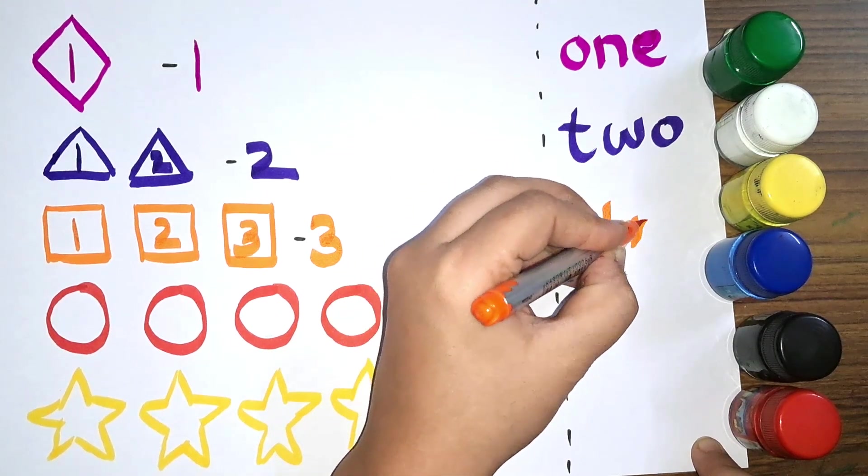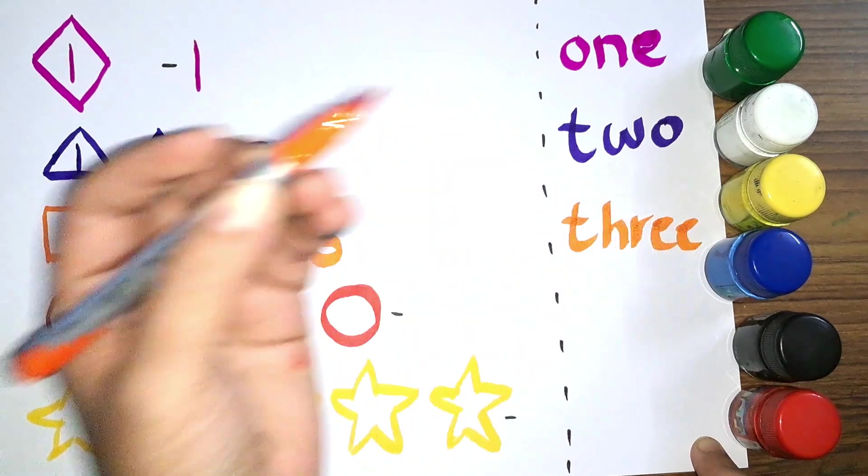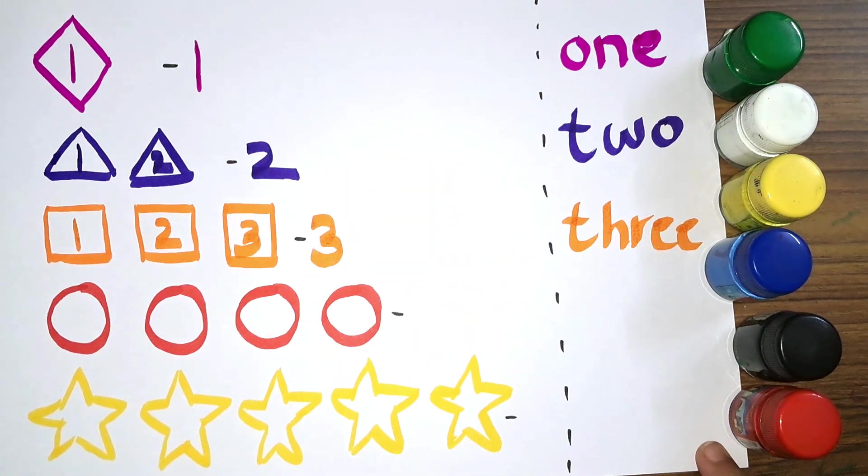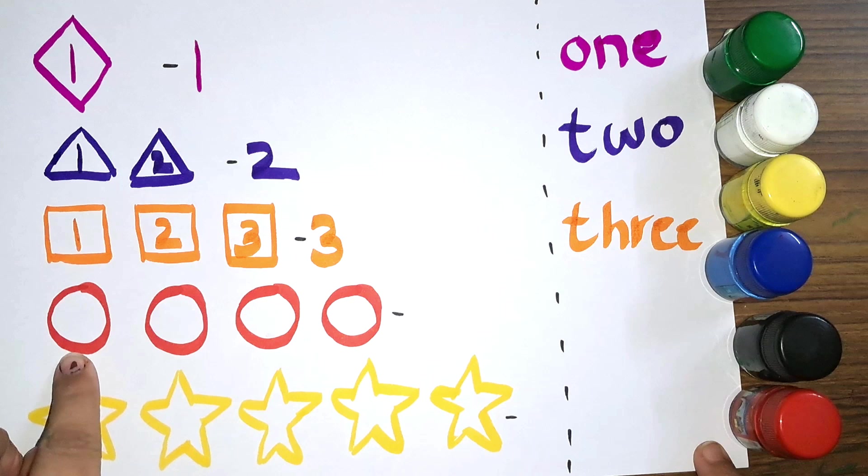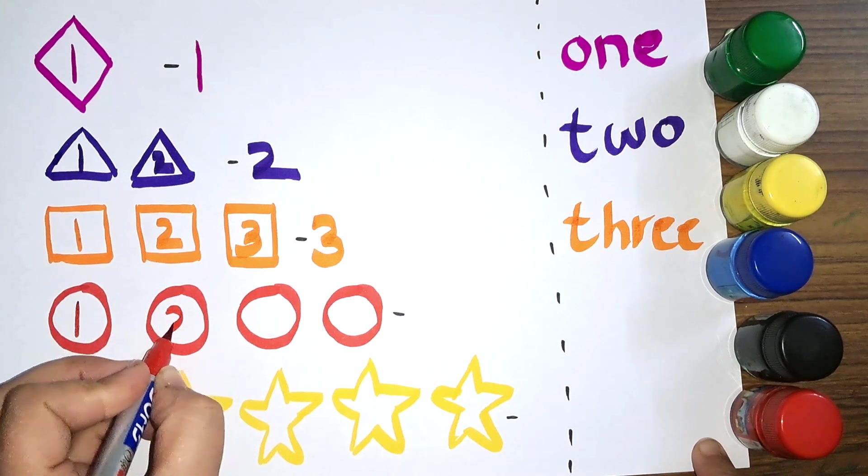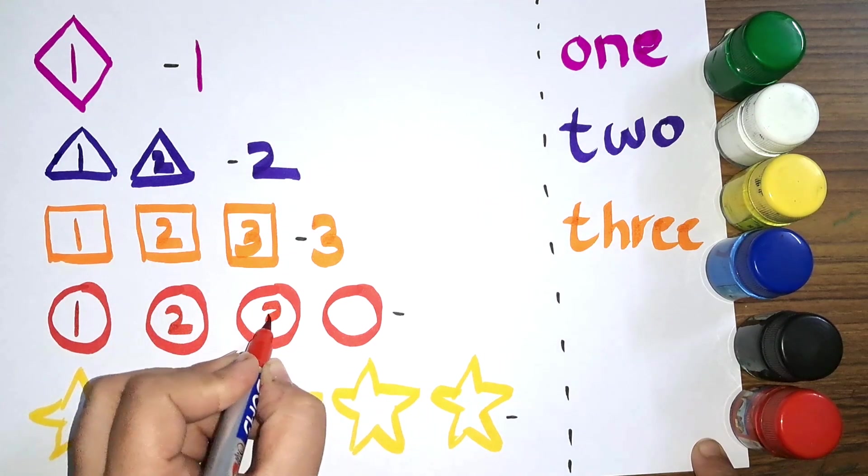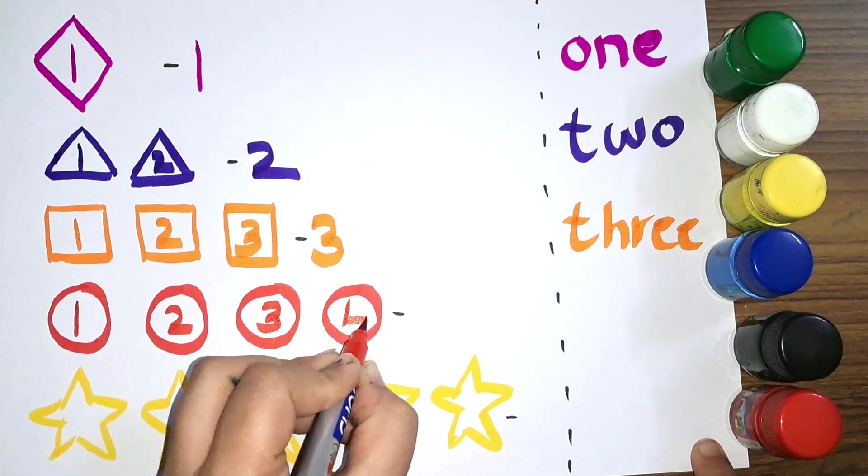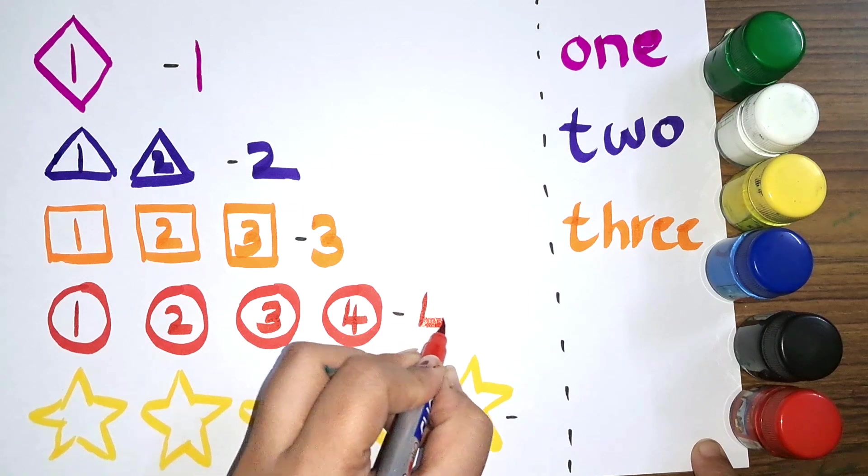Then we have circle. How many circles do we have? One, two, three, four. Four circles.